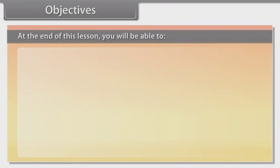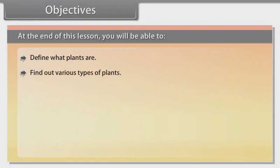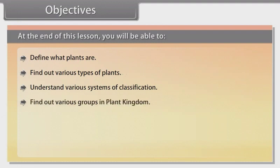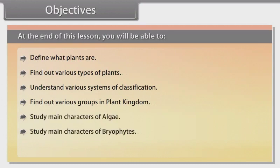At the end of this lesson, you'll be able to define what plants are, find out various types of plants, understand various systems of classification, find out various groups in plant kingdom, study main characters of algae, study main characters of Bryophytes, identify main characters of Pteridophytes.